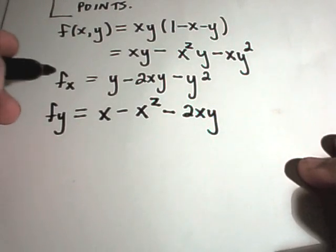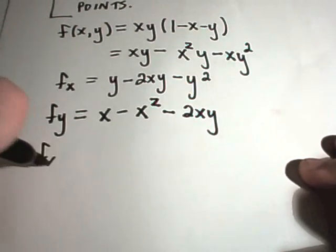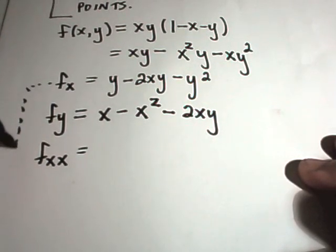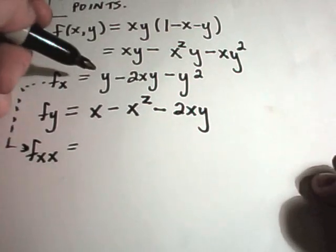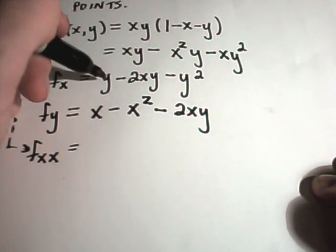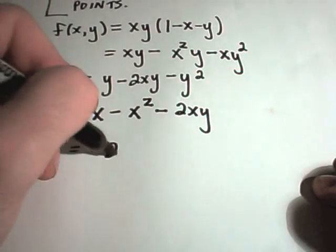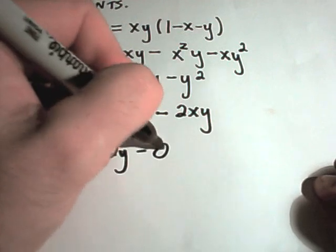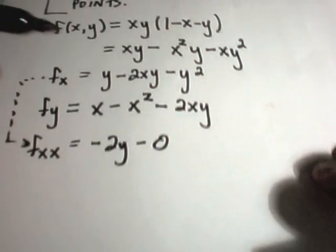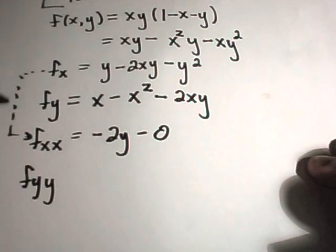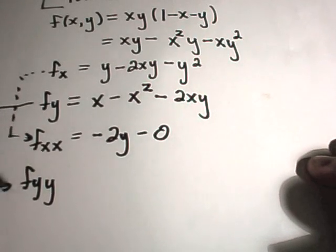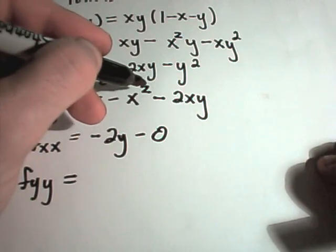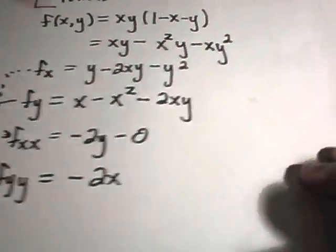Now if I take the second partial with respect to x, I'm taking the derivative of the fx expression again, treating x as my variable. Well, y is a constant, that'll just go away, and I'll get minus 2y. And likewise, my second partial with respect to y — now I'm treating y as the variable. The first x minus x squared terms are just constants that'll go away, and I'll be left with simply negative 2x.